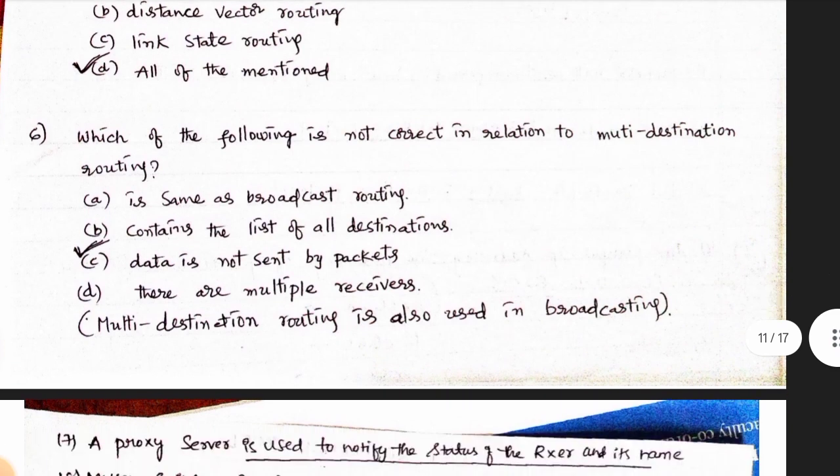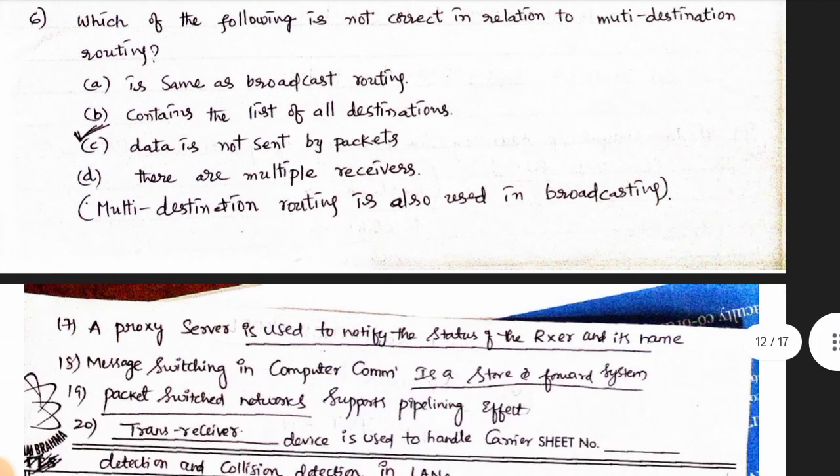Next one: Which of the following is not correct in relation to multi-destination routing? Option 3 is correct — data is not sent by packets. Second point: multi-destination routing is also used in broadcasting.